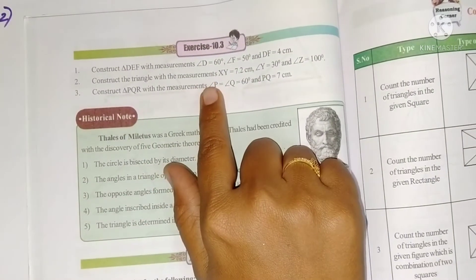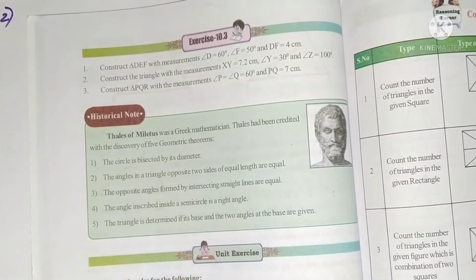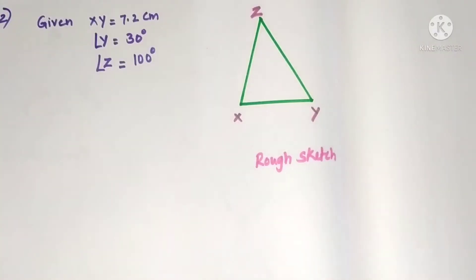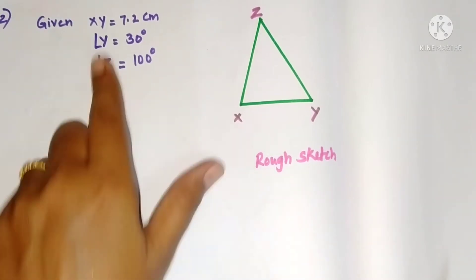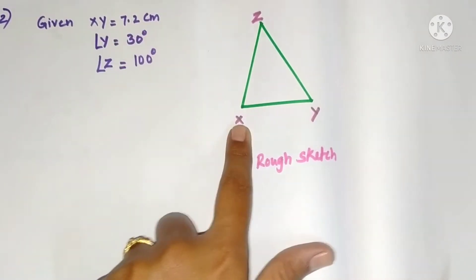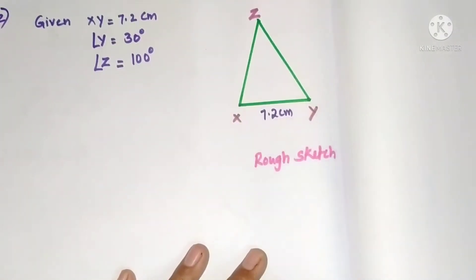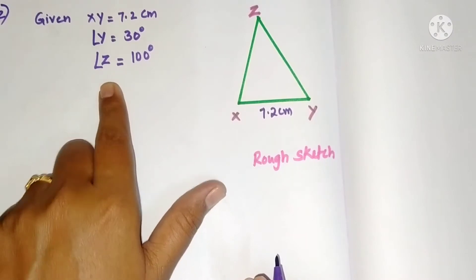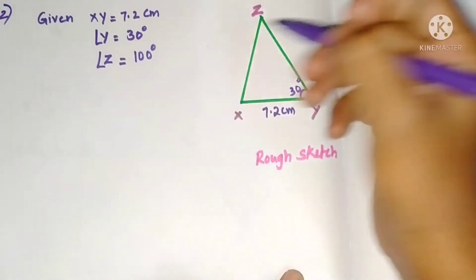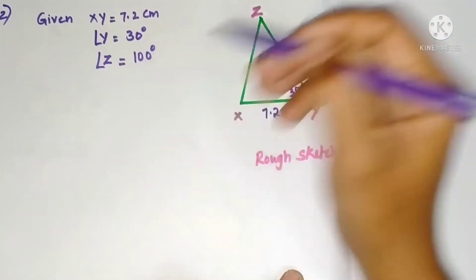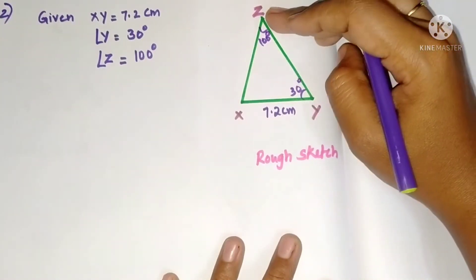Second problem: construct a triangle with measurements XY equals 7.2 cm, angle Y equals 30 degrees, angle Z equals 100 degrees. Draw the rough triangle with XY as the base, 7.2 cm. Angle Y is 30 degrees and angle Z is 100 degrees, but it is very difficult to draw angle Z directly using the protractor.